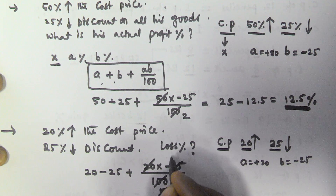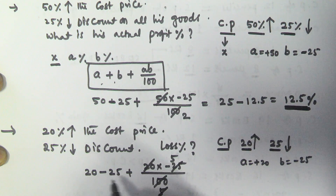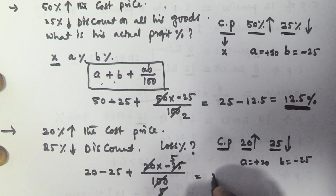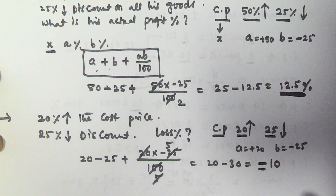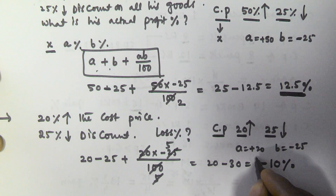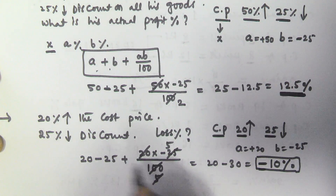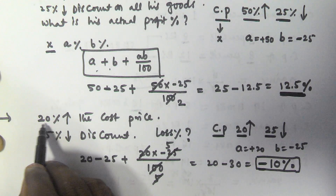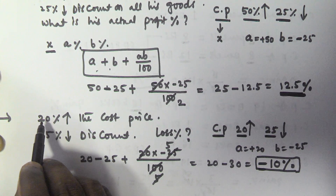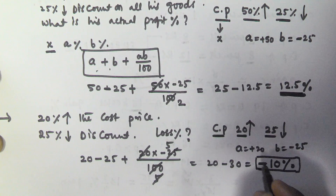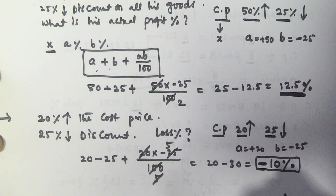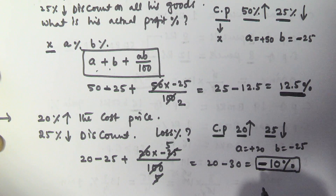So 20 into 25 divided by 100 gives minus 5. So we have 20 minus 25 minus 5, which equals minus 10. This negative sign denotes there is a loss. So there is an overall loss of 10 percentage — if he marks all his goods 20 percentage above the cost price and provides 25 percentage discount, the resultant is 10 percentage loss. I hope you got this — thank you very much for watching, please subscribe to my channel.